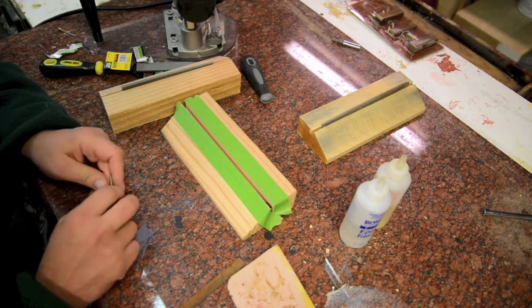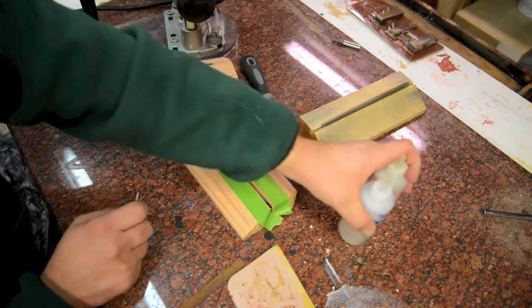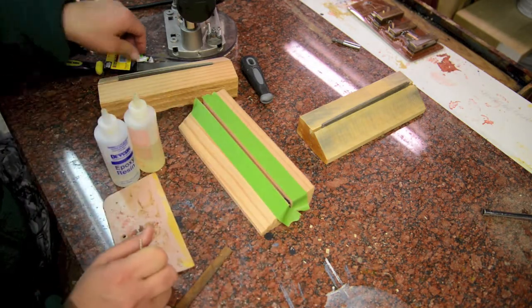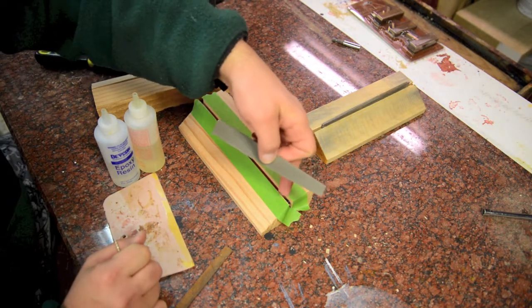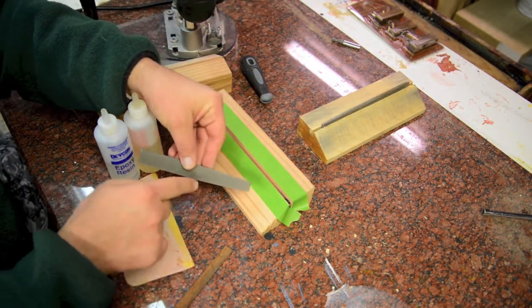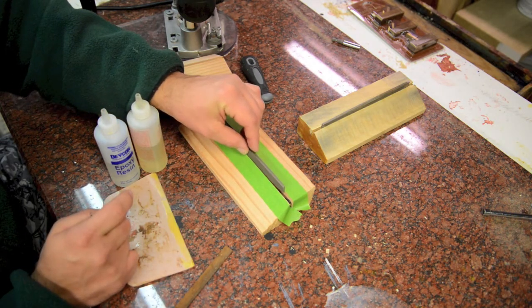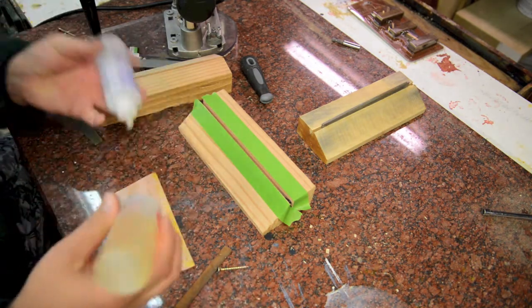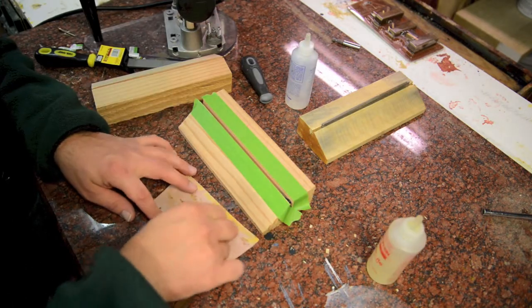Alright, the last step here with setting the file is gluing it in. So I've got some 5 minute epoxy, I'm going to mix it up. I've got my file, I've got a little bit of a spacer right here to hold up this end of the file, because this end tapers, so I want to leave it at a consistent depth. So I've got a little spacer in there, just a little wire tie that I'm going to space all this out with.